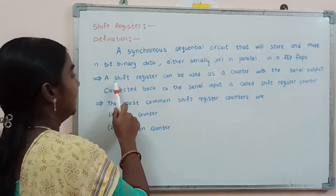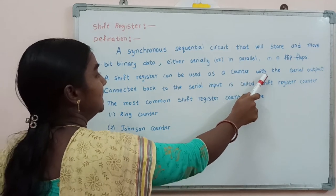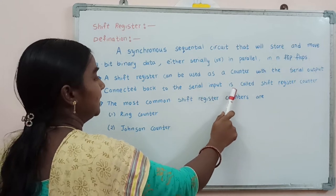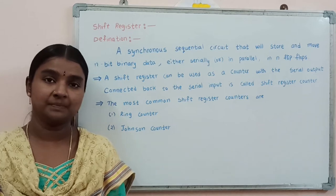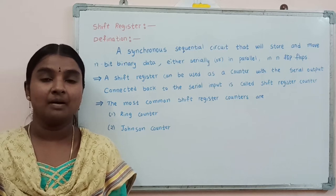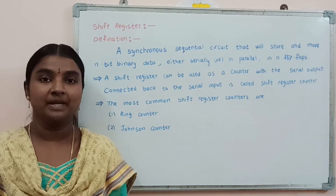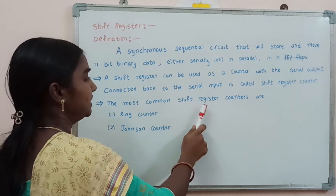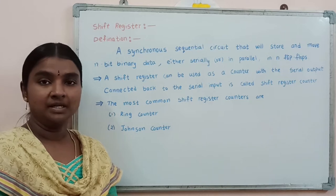A shift register can be used as a counter, with the serial output connected back to the serial input — this is called a shift register counter. In an n-bit shift register, the last flip flop output is connected back to the first flip flop input. The most common shift register counters are two types: ring counter and Johnson counter.